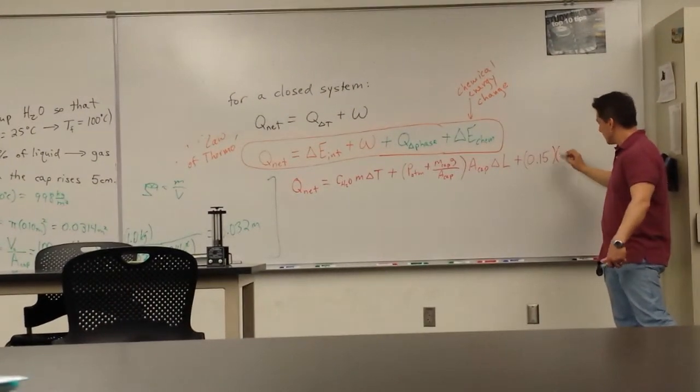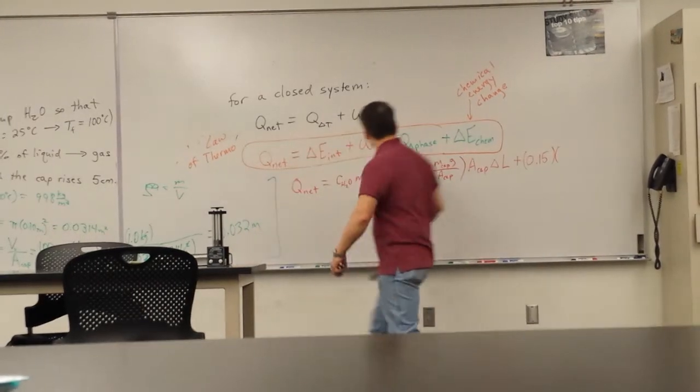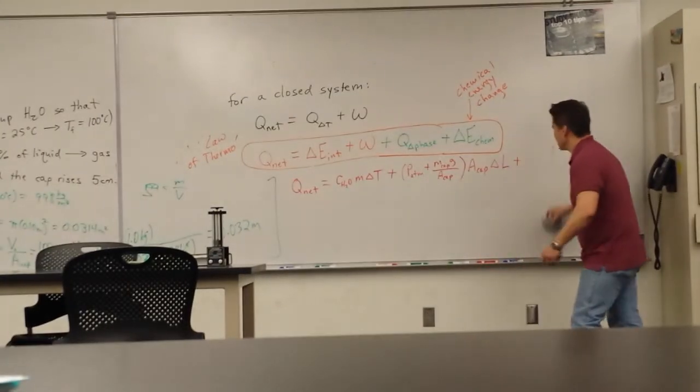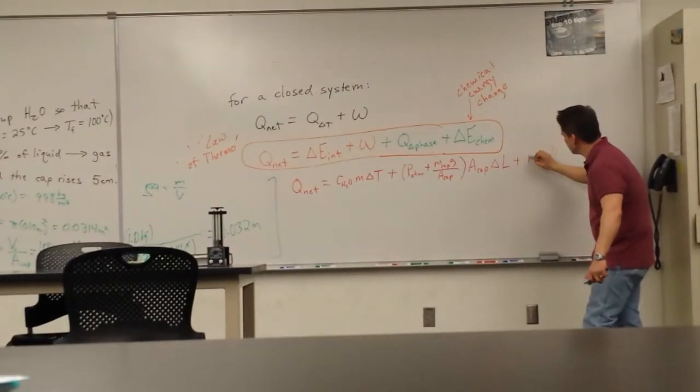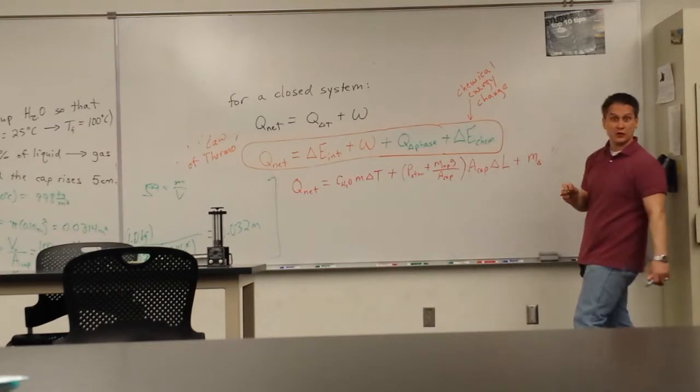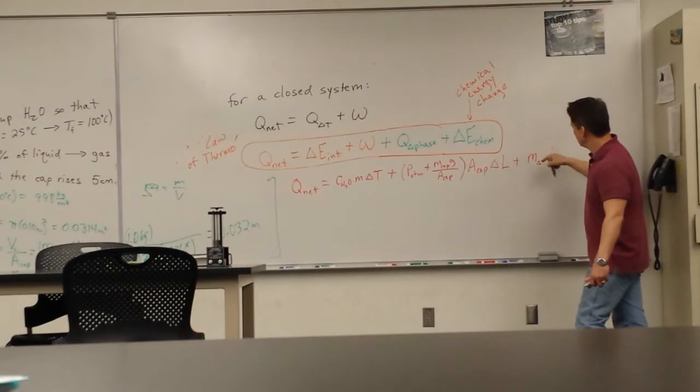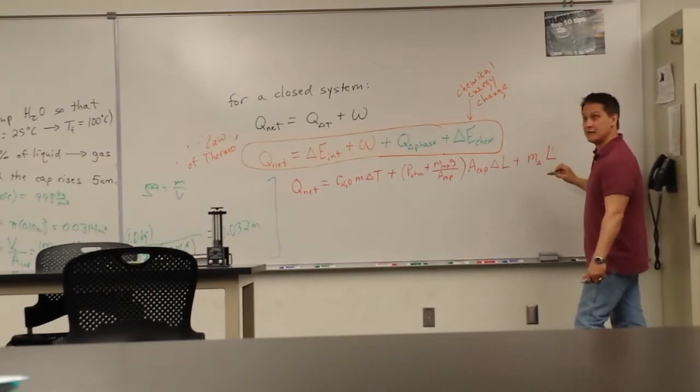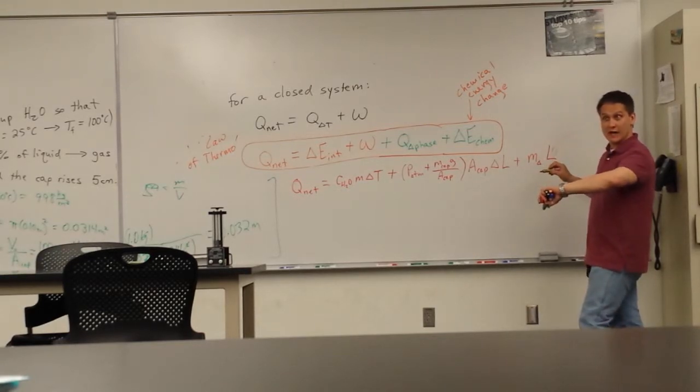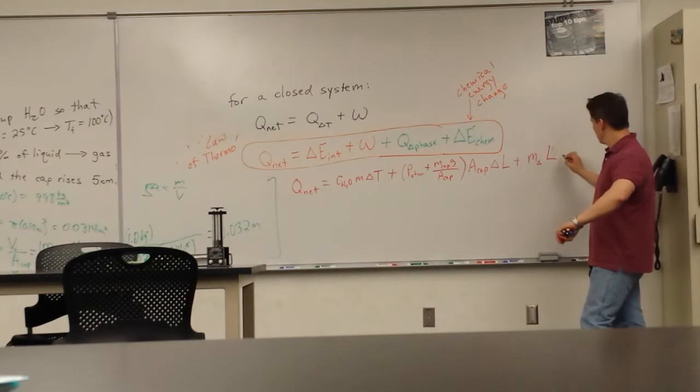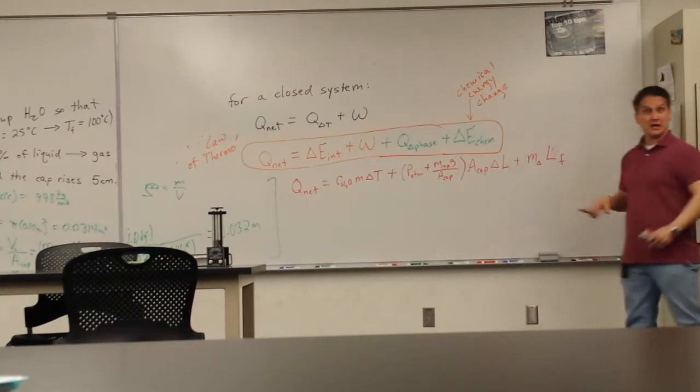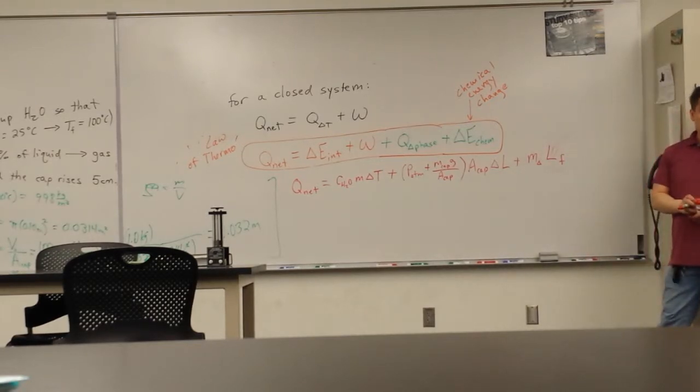And then we have to add to that 0.15, right there's your 15%, times the mass of the water that undergoes phase change, times the latent heat of fusion because it's this fraction evaporates. I'm going to add these up bare minimum, figure out what the heat is.